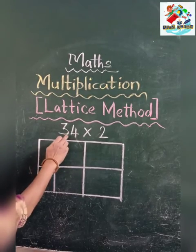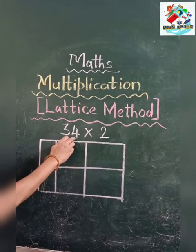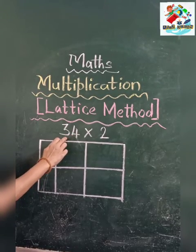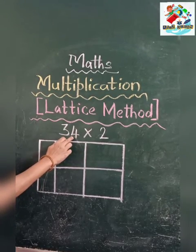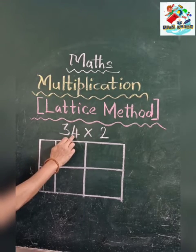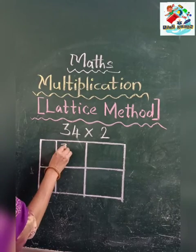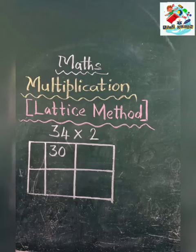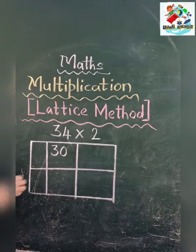Now see, this is 34. We are going to write this number into tens and units. So 34 means 3 tens, see 30, isn't it? Like this 30.